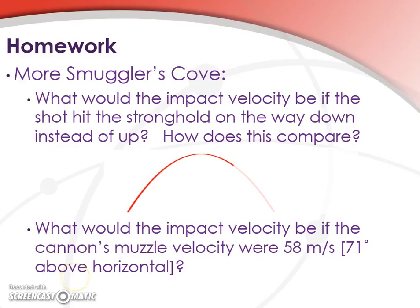And the other question is, what would the impact velocity be if the cannon's muzzle velocity were 58 meters per second and we had needed an angle of 71 degrees above horizontal to hit the target? Thanks and have a great night.